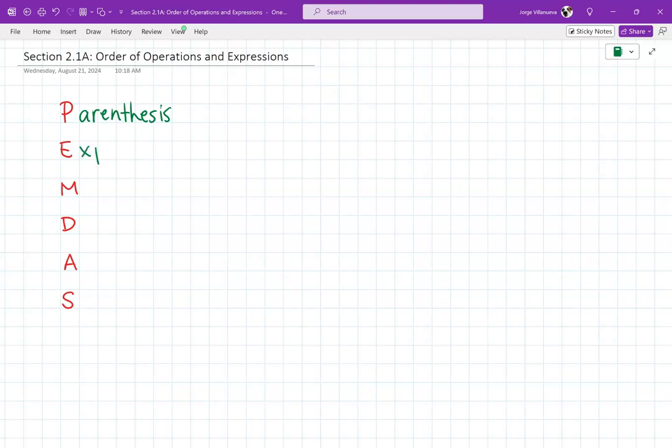After that, we move on to exponents, right? So any exponents that you see. So maybe there's a square, a power of 2, a power of 3. We're going to do that next.